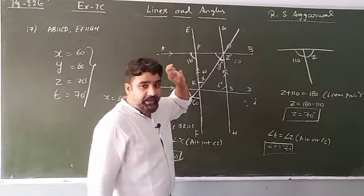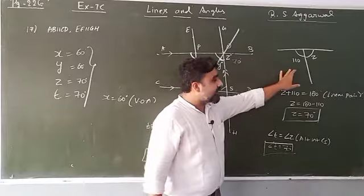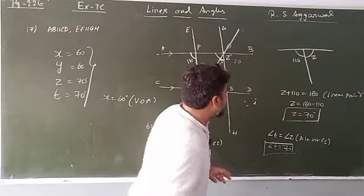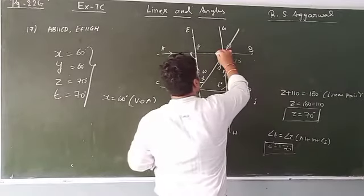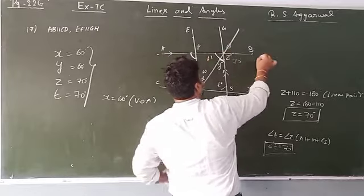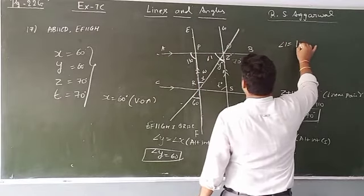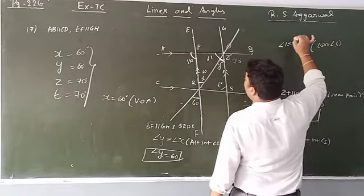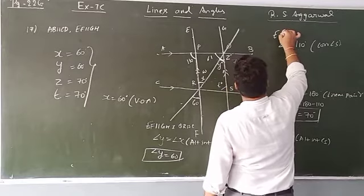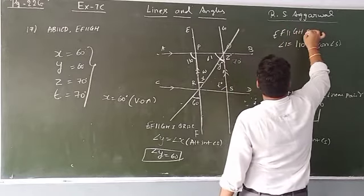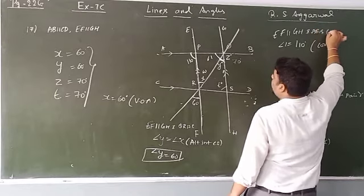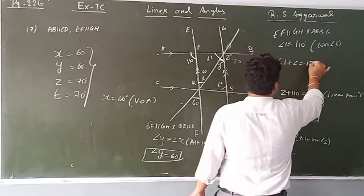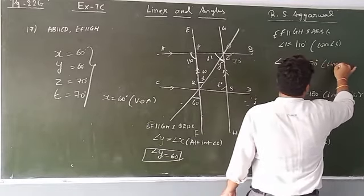To write this formally: angle 1 equals 110 degrees because AB is parallel to CD — corresponding angles. Then angle 1 plus angle z equals 180 degrees — linear pair. So z equals 70 degrees.